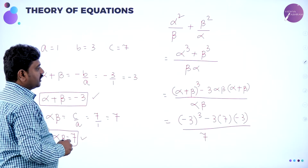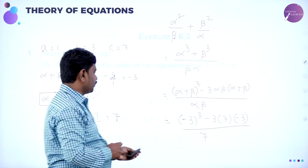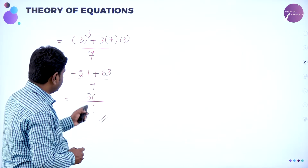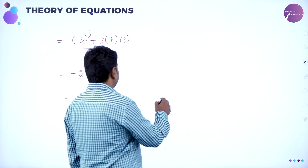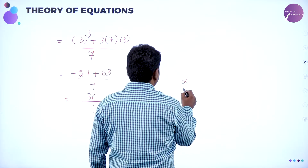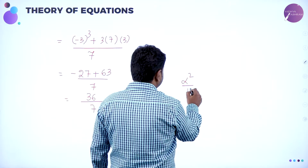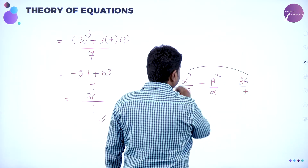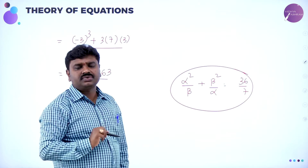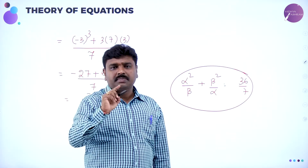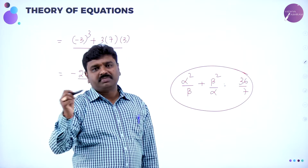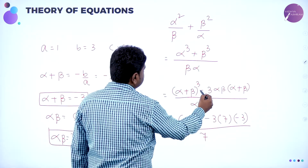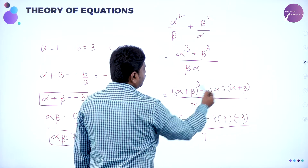Earlier we calculated alpha cube plus beta cube as 36, and the same numerator appears here. So the value of alpha squared by beta plus beta squared by alpha is 36 by 7. In this problem we again used the identity A cube plus B cube equals A plus B whole cube minus 3AB into A plus B.